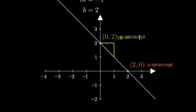Let's verify some additional points on our line. When x equals negative 1, y equals 3. When x equals 1, y equals 1. When x equals 3, y equals negative 1.